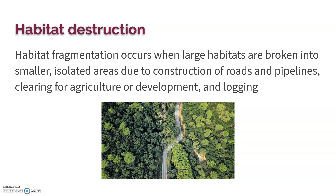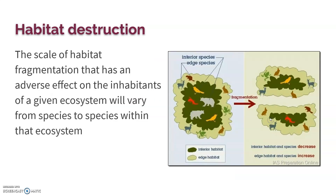Habitat destruction and fragmentation is the number one cause of biodiversity loss. If you take away a species' home, it has nowhere to live. Even habitat fragmentation is detrimental — taking a wide range of habitat and breaking it into smaller sections that species can't necessarily pass through. Fragmentation occurs from construction of roads or pipelines, clearing for agriculture, development, and logging.